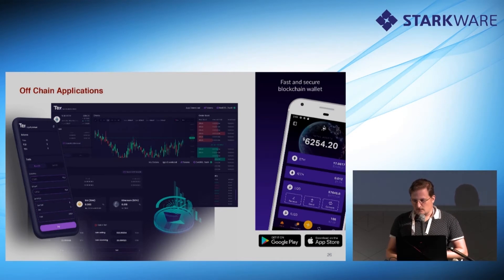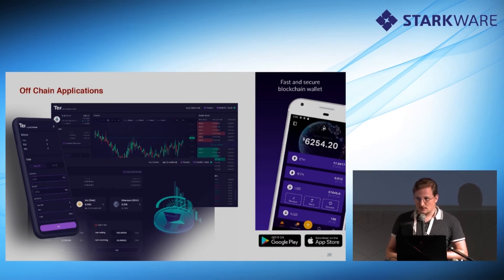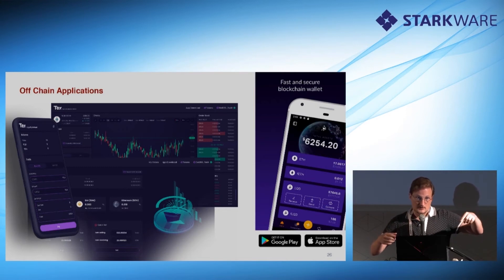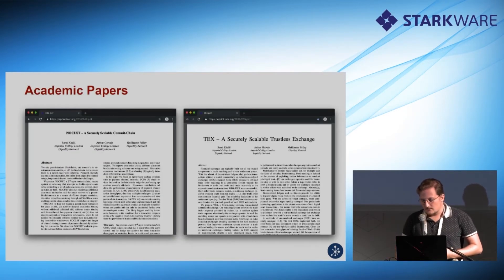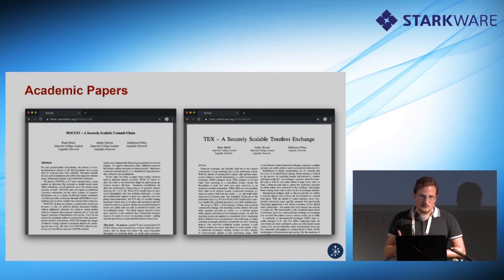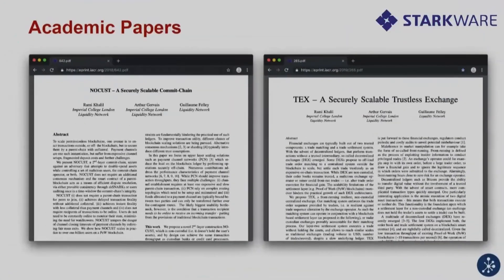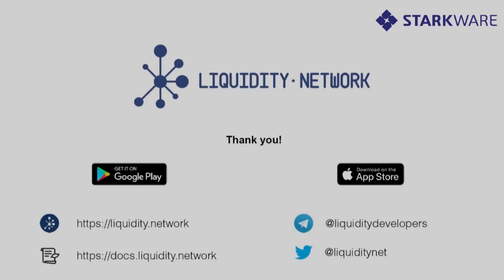On the right side you can see the Liquidity Network wallet already on the Play Store and App Store on mainnet. On the left side you can see a mock-up of TEX — you can already try the Ropsten version, it's online at tex.liquiditynetwork. You can send funds from the mobile wallet to the exchange near-instantly and then trade on the Ropsten network. We really see this as a layer where you can build your DEX or wallet and enable it to be more scalable. The full details are published in two papers. It's very important to have this open research so anyone can build such systems or extend them and build better ones. Thank you very much, I'm happy to take your questions.